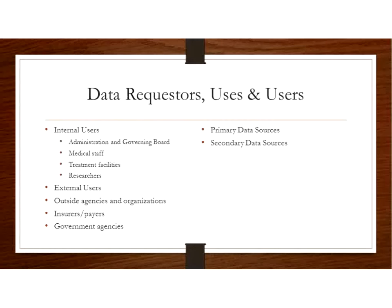When considering sources of data, we have either a primary source or a secondary source. A primary data source means that information was entered at the point of care — basically the patient medical record is the primary data source. A secondary data source means that information was abstracted from that medical record or abstracted from that primary data source.